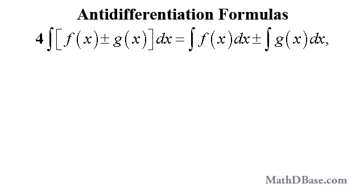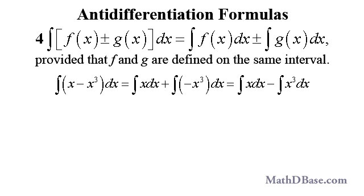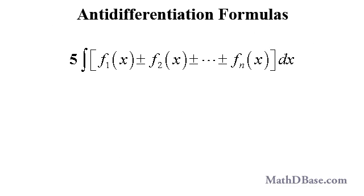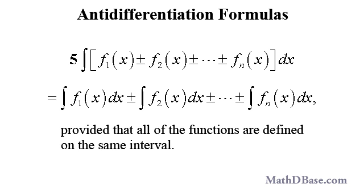To find an antiderivative of a sum or difference of functions, find antiderivatives of the two functions separately, then add or subtract the results. This formula is valid provided that both functions are defined on the same interval. For example, the antiderivative of x minus x cubed equals the antiderivative of x minus the antiderivative of x cubed. Applying the power rule, we get x squared over 2 minus x to the fourth over 4 plus c. Checking: the derivative of half x squared minus a quarter x to the fourth equals x minus x cubed. This extends to any finite number of functions, provided all are defined on the same interval.